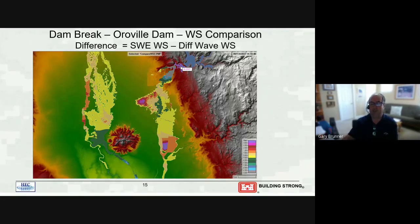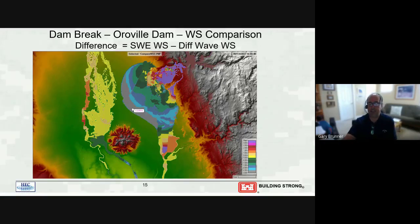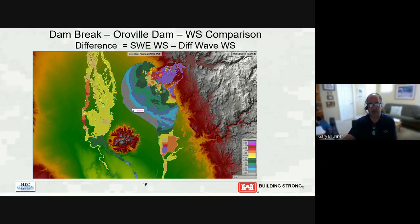Just downstream of the dam, the color turns gray/blue, meaning diffusion wave equations were higher there. This is because the diffusion wave flood wave traveled downstream faster — the shallow water wave hadn't reached that spot yet, which is why diffusion wave showed a higher answer there. The pattern continues: near the dam, shallow water is much higher; further downstream, it transitions to similar values; then diffusion wave is higher on the leading edge because it sends water out faster.